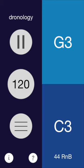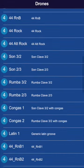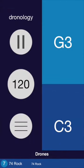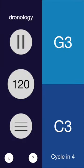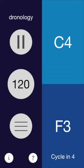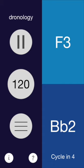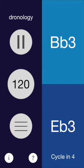My favorite way to work with this app is to use what we call drone sequences. These are drones that change over time. The simplest, of course, is the cycle of fourths. This simply transposes the drone tones by a perfect fourth every four bars.